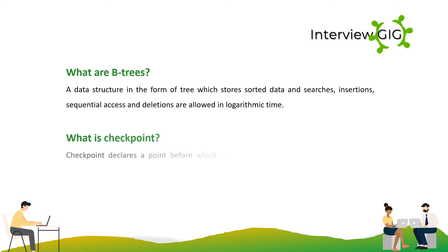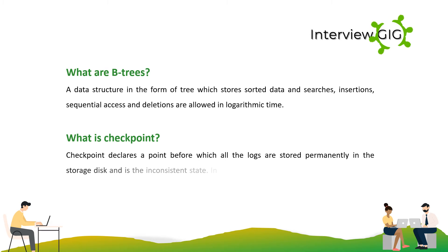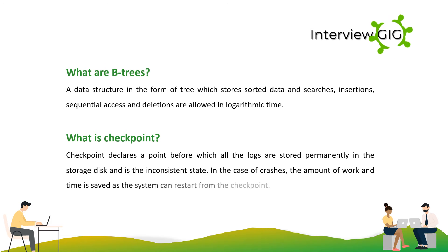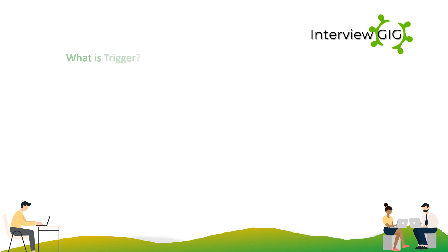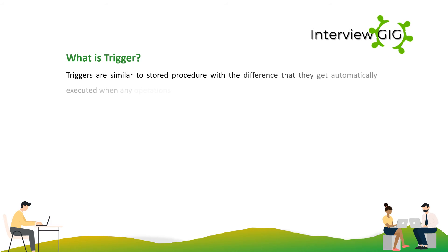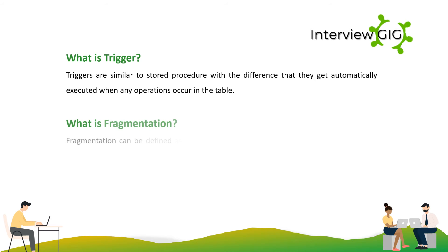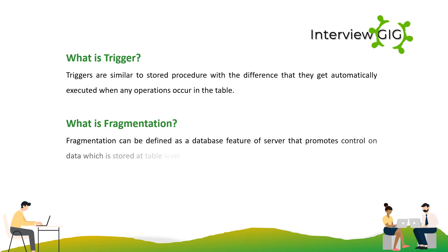A checkpoint declares a point before which all the logs are stored permanently in the storage disk. In the case of crashes, the amount of work and time is saved as the system can restart from the checkpoint. Triggers are similar to stored procedures with the difference that they get automatically executed when any operations occur in the table. Fragmentation is a database feature that promotes control on data stored at the table level by the user.